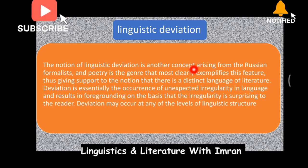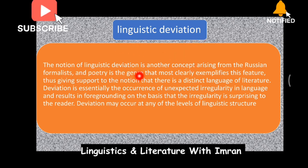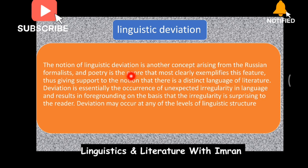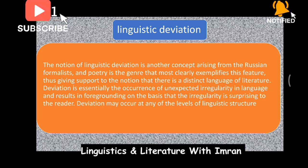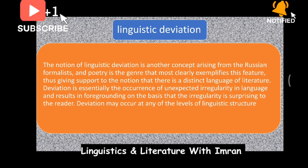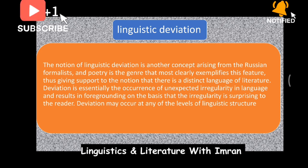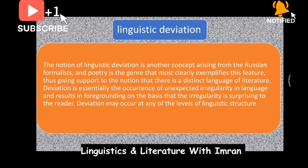Now we will discuss linguistic deviation. The notion of linguistic deviation is another concept arising from Russian Formalism. Poetry is the genre that most clearly exemplifies this feature — linguistic deviation is most commonly found in poetry. It doesn't mean we can't find it in prose or non-literary language, but commonly we find linguistic deviation in poetry.